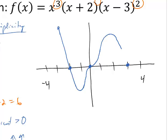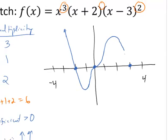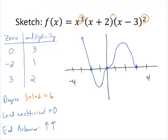And as it approaches 3, we have multiplicity 2, so it will bounce off and go on to positive infinity. End behavior checks out, so this seems like a reasonable sketch for the curve. Thanks.